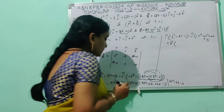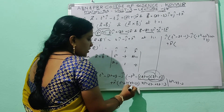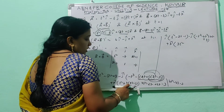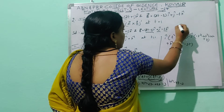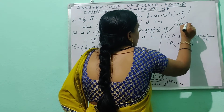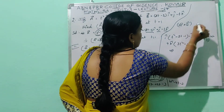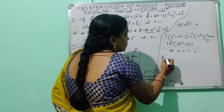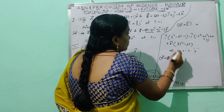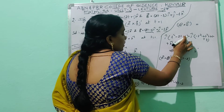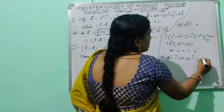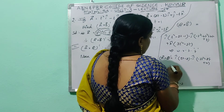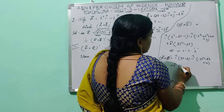So ā × b̄ = î(t²−2t−1) − ĵ(−t³−4t²+4t+3) + k̂(3t²−3t). Now differentiating with respect to t: d/dt of (t²−2t−1) = 2t−2, d/dt of (−t³−4t²+4t+3) = −3t²−8t+4, and d/dt of (3t²−3t) = 6t−3. So (ā×b̄)' = î(2t−2) − ĵ(−3t²−8t+4) + k̂(6t−3).